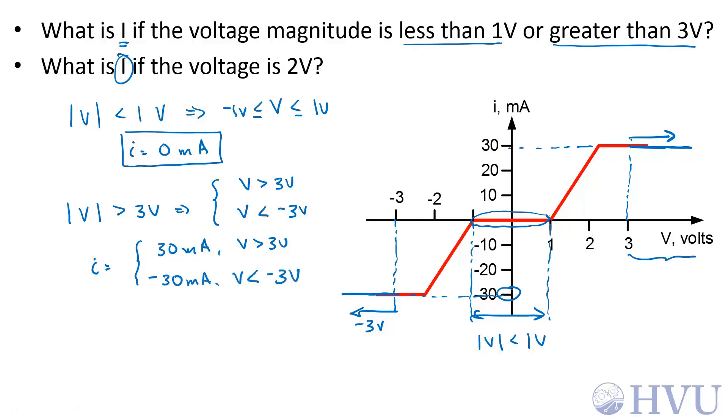Finally, we want the current if the voltage is some specific value, say 2 volts. If V equals 2 volts, we go up to the curve at that voltage value, follow it across to the current, and the current looks like it's here when V equals 2 volts, which I would guess is about 22 or 23 milliamps.